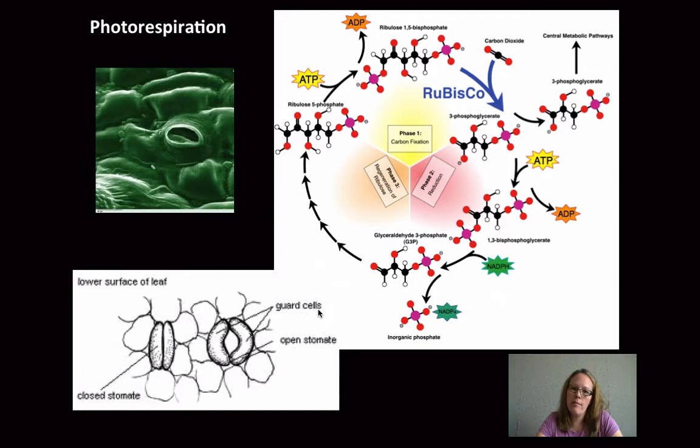So there's a problem though with the Calvin cycle. It's called photorespiration. This enzyme, Rubisco, can also bind with oxygen. So it only does this when there's no carbon dioxide available to the plant. So when would that happen? If you look here at the picture, this is an actual stoma from a plant cell.